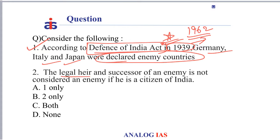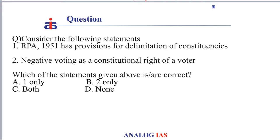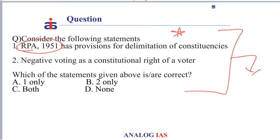An important statement to note: the legal heir and successor of an enemy is not considered an enemy if he is a citizen of India. Until the 2017 amendment, this was considered to be true — but not anymore. If you haven't watched the previous video on important provisions of the Representation of the People's Act 1951, please go back to that. This video is a revision of those points, so please post your answers in the comment section below along with an explanation.